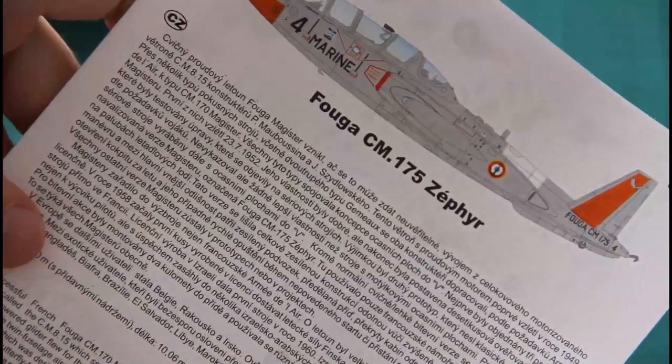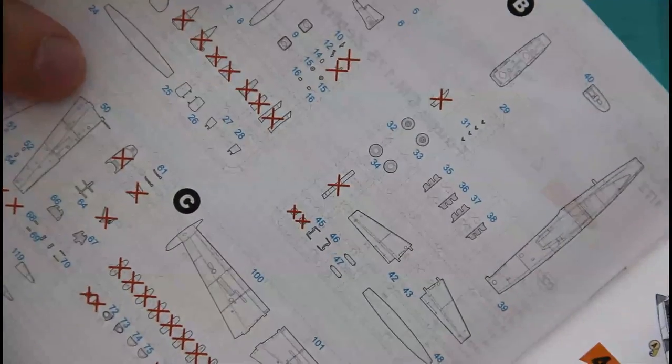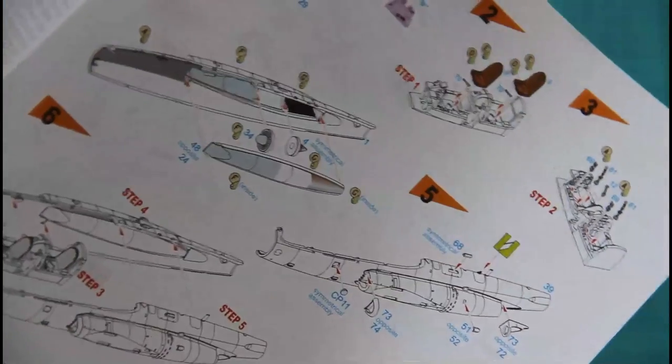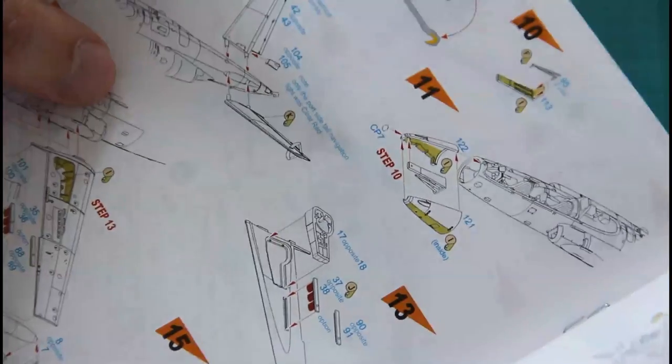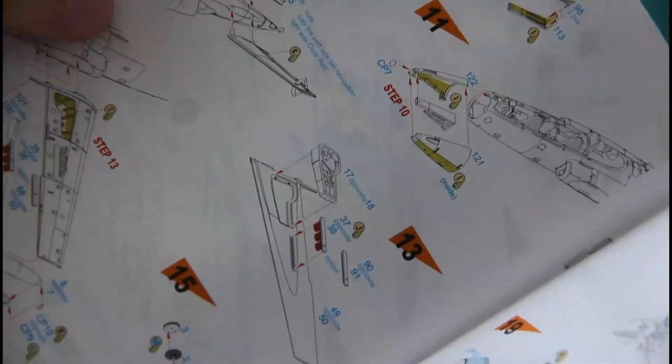On the first page, the manual contains a short history note written in Czech and English. Then comes the parts map and assembly process starts. Assembly instructions are more or less understandable, so I think it will be easy to figure out what you have to do on each step.